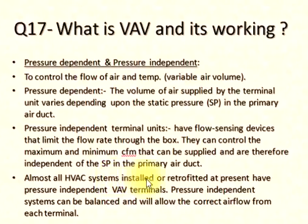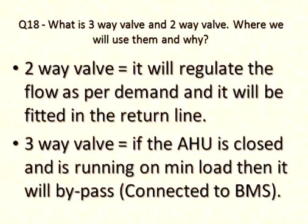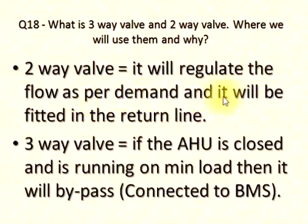Almost all HVAC systems installed or retrofitted at present have pressure independent VAV terminals. Q18: What is a 3-way valve and a 2-way valve — where and why do we use them? 2-way valve: it regulates the flow as per demand and is fitted in the return line. 3-way valve: if the AHU is closed and running on minimum load, it will bypass — connected to BMS.